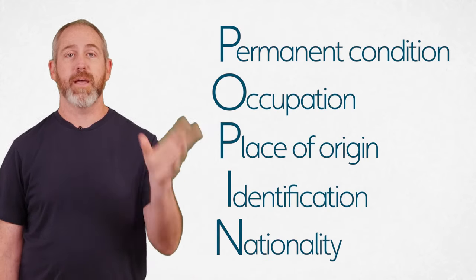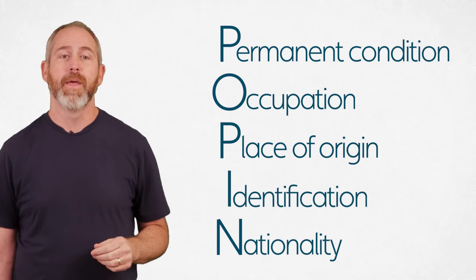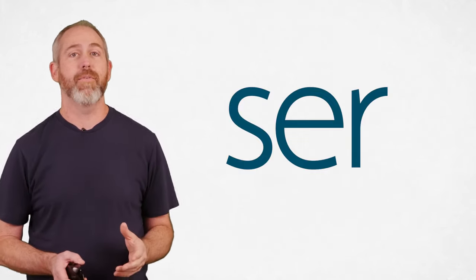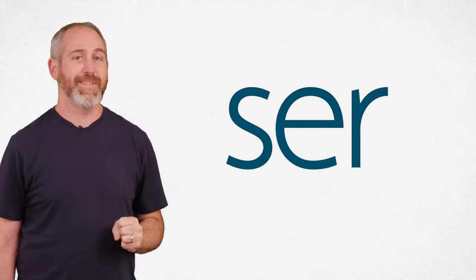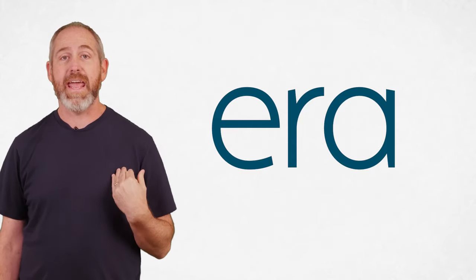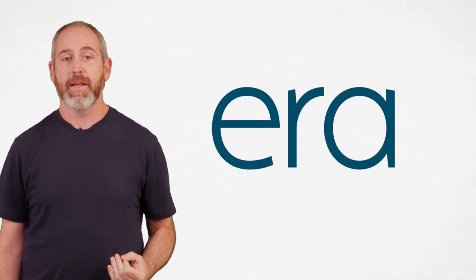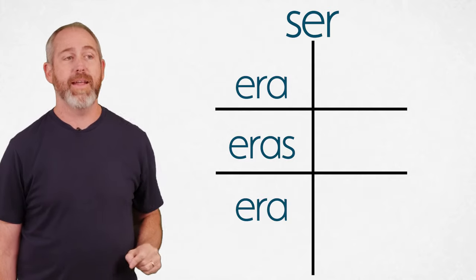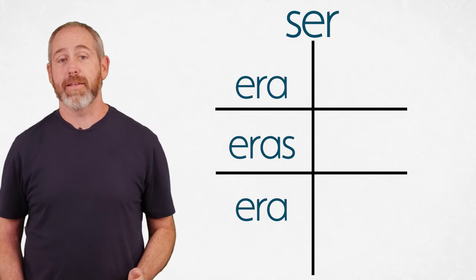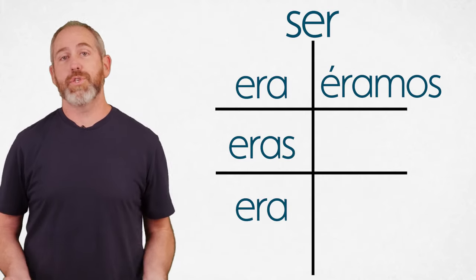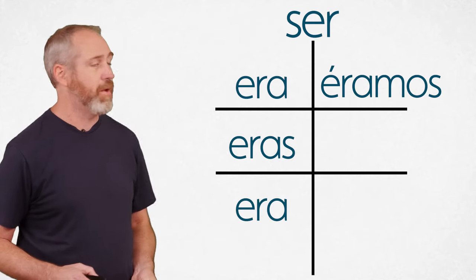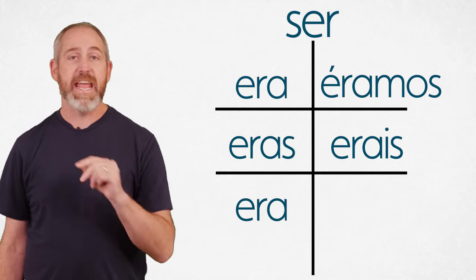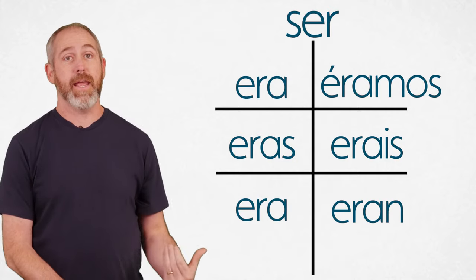Ser is one of them. Ser, to be, permanent condition, occupation, place, origin, identification, nationality. But ser is one of those verbs. And so we're not going to take a form of ser and modify it. It actually completely changes. So we're going to change it to era. I was. Yo era. Or I used to be. Yo era. So we're also going to put that down on the bottom left for the él, ella, usted form. And in the middle, we're going to put eras. Tú eras. Now up on the top right, the nosotros form is the only form that has an accent. It's éramos. We were. Or we used to be. And then on the vosotros part, we have erais. And then finally the ellos, ellas, ustedes form is eran.